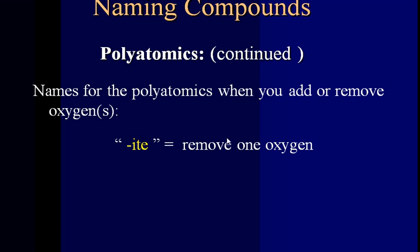If you recognize that one of the oxygens has been removed from one of the 7 polyatomics — those 7 will end in -ATE — we now have an -ITE ending. The charge stays the same. The charge will always remain the same when an oxygen has been removed or added. Once we go over formal charges, Lewis structures, and VSEPR, it'll all make sense. But be patient right now — just have a little faith.